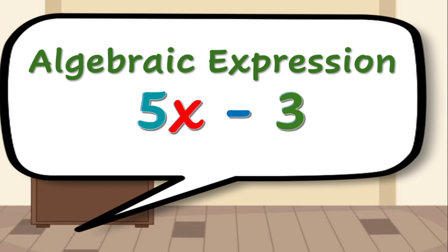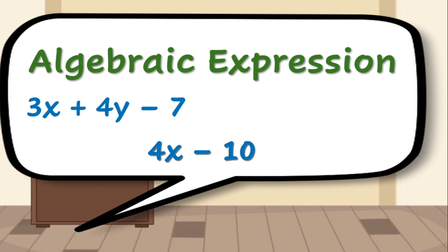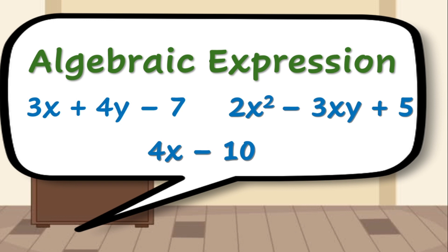And lastly, of course, our operation in the given expression is subtraction. Now, will you give me some more examples of algebraic expression? 3x plus 4y minus 7. Another? 4x minus 10. Last one? 2x squared minus 3xy plus 5. Great! It sounds like you really understood our lesson on algebraic expression.